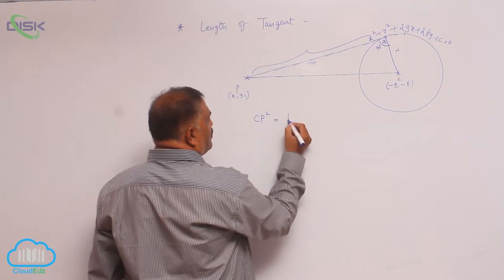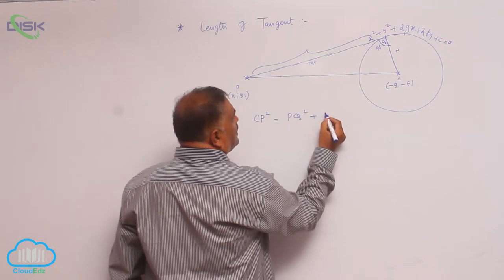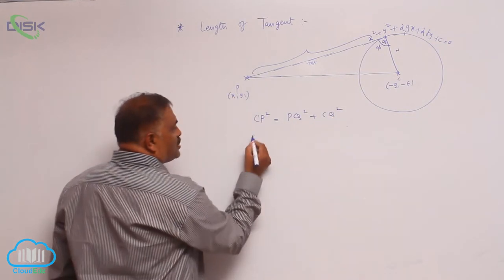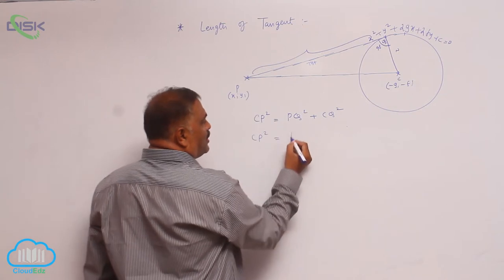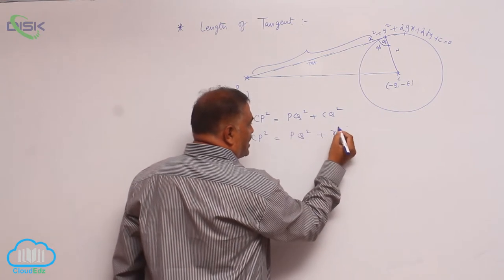CP square is equal to PQ square plus CQ square. So CP square is equal to PQ square plus r square.